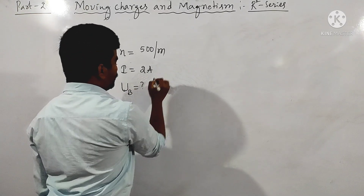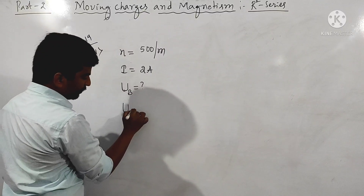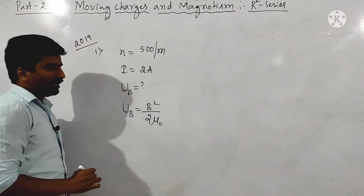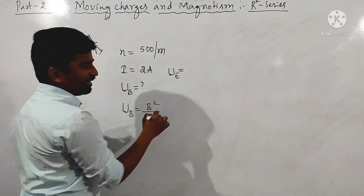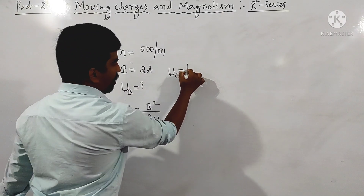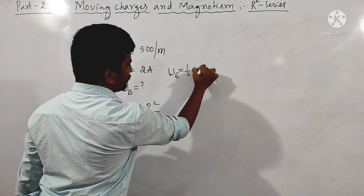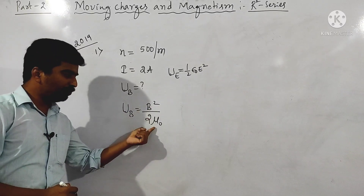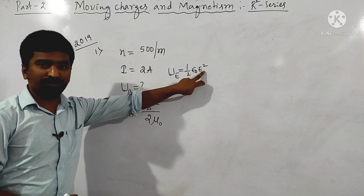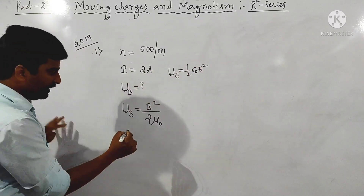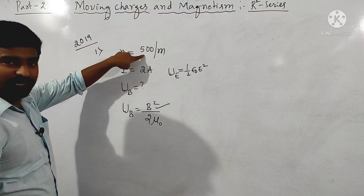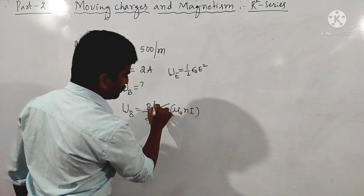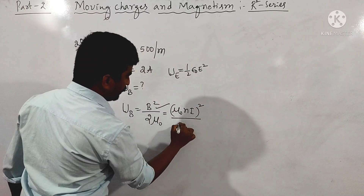Magnetic energy density — we know that the formula for magnetic energy density is B squared divided by 2 mu naught. This is analogous to the electric energy density in a capacitor which is epsilon naught E squared divided by 2. The magnetic field inside the toroid is mu naught n i, so energy density equals mu naught n i squared divided by 2 mu naught.